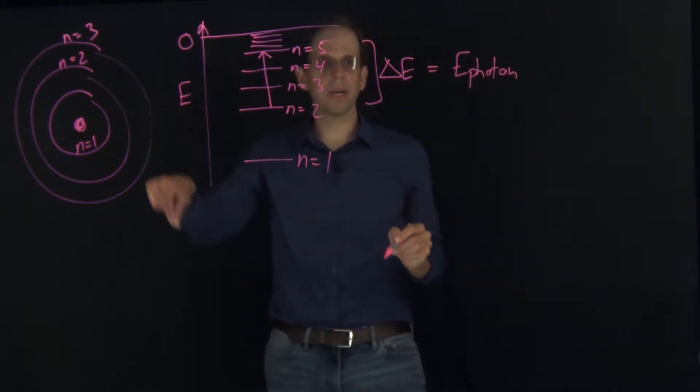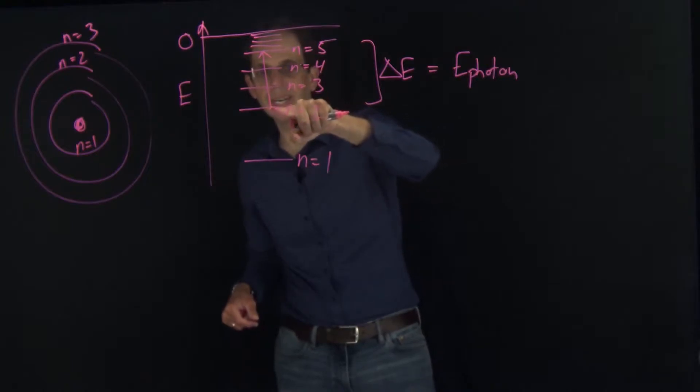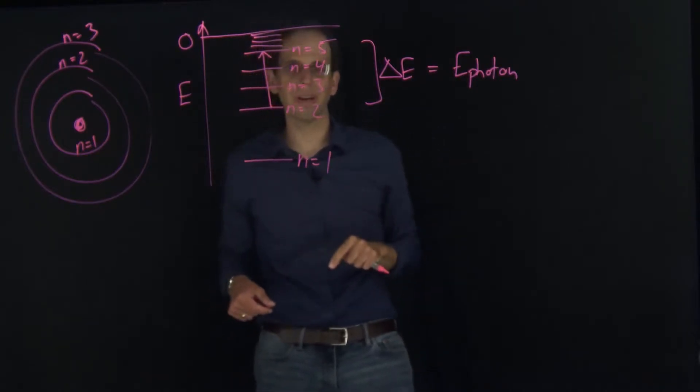If I hit my atom with the photon and it has this delta E, and we're starting with the electron in the n equals 2 state, it can jump to the n equals 5 state.